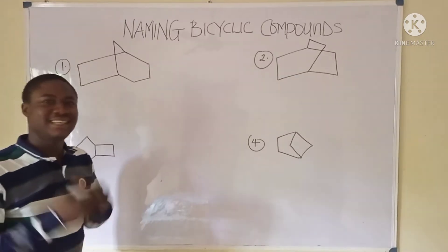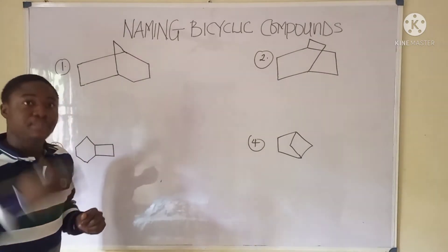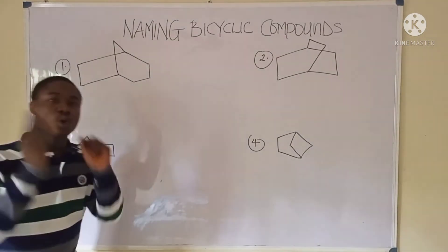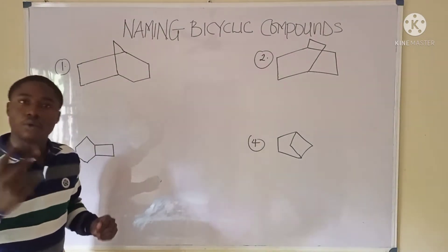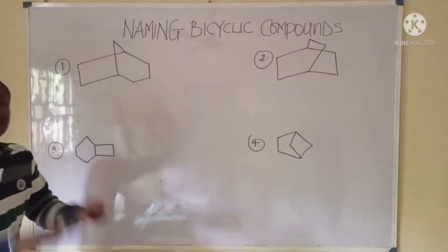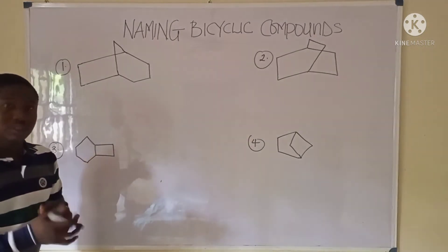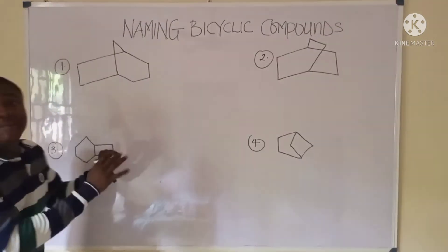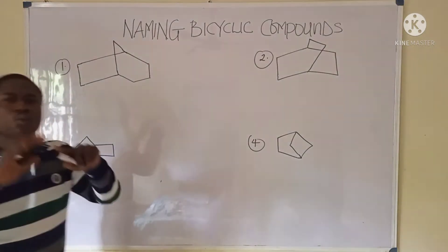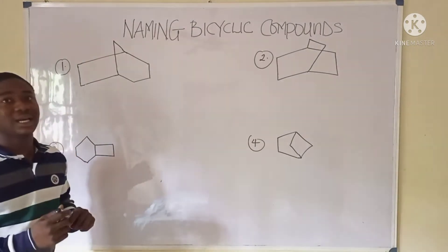Welcome back to Chemistry Made Easy with Bright Edu. In today's video lesson, I'll be discussing how to name bicyclic compounds. For a compound to be bicyclic, it must possess two rings. The first step in naming a bicyclic compound is to locate the bridgehead carbons — these are simply the carbons that join the two rings together.